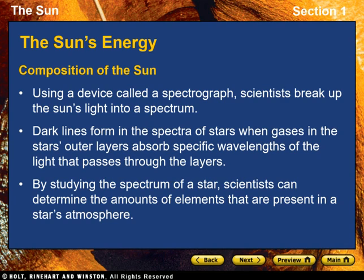The sun's energy: The sun appears to the unaided eye as a dazzling, brilliant ball that has no distinct features. Because the sun's brightness can damage your eyes if you look directly at it, astronomers look at the sun only through special filters. Astronomers also use other specialized scientific instruments to study the sun.